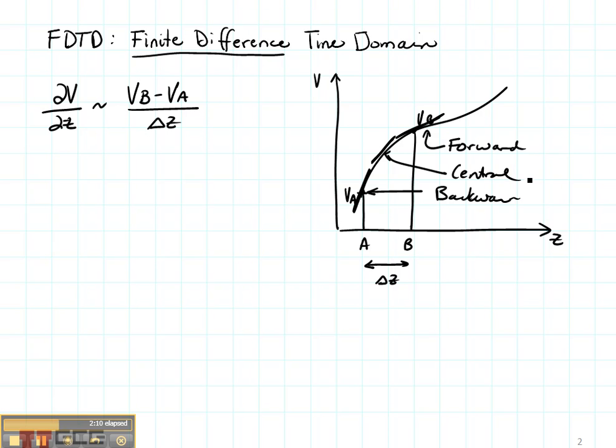The best representation for VB minus VA over delta Z is in fact the central difference formula which means if I have two points VA and VB and I represent the slope of them, the slope between them like this, then the derivative that I am representing is right here in the center in between VA and VB.